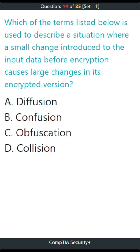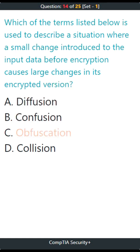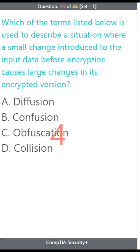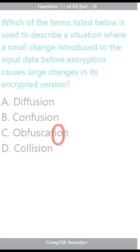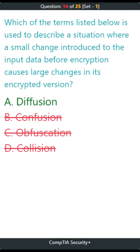Question 14. Which of the terms listed below is used to describe a situation where a small change introduced to the input data before encryption causes large changes in its encrypted version? A. Diffusion, B. Confusion, C. Obfuscation, D. Collision. The correct answer is A. Diffusion.